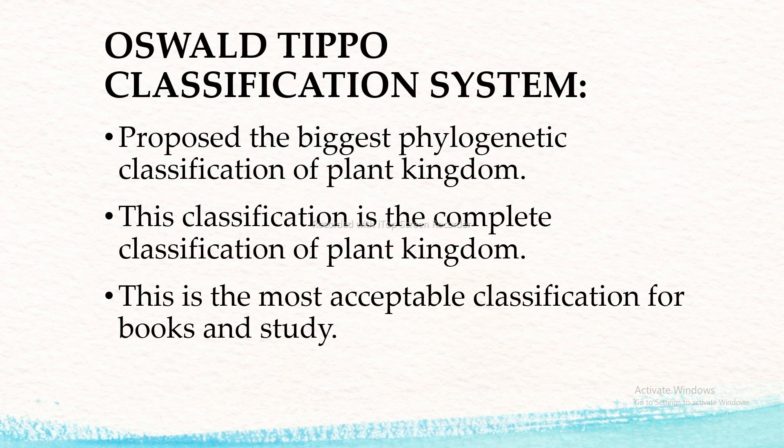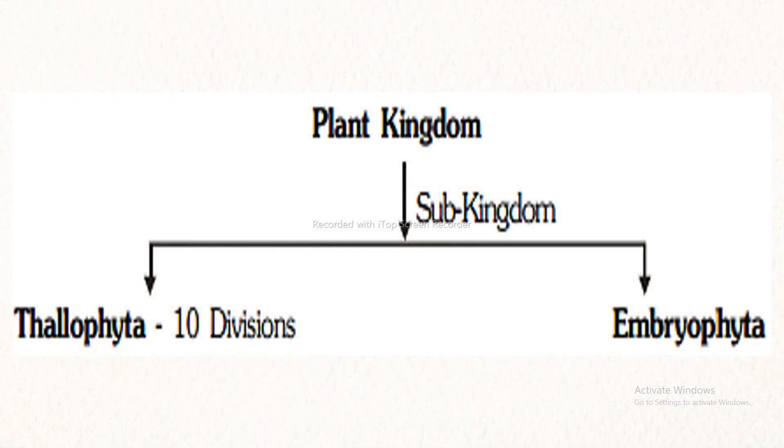Next, I am going to discuss about the Oswald Tippo classification system. He proposed the biggest phylogenetic classification of the plant kingdom. This classification is the complete classification of the plant kingdom and is the most acceptable classification for books and study. The plant kingdom is divided into two sub-kingdoms: sub-kingdom one is Thalophyta, which includes about 10 divisions, and the next is Embryophyta.